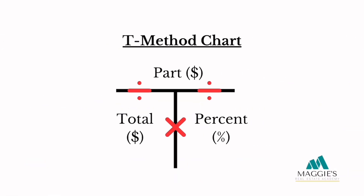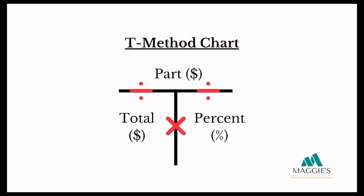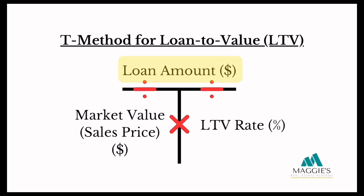Or we can just use the T-method chart to solve those problems. I'll link a video in the comment section below explaining the T-method, but it's so easy I'm sure you'll figure it out just by watching me solve these problems. For loan-to-value ratio, we use the T-method chart where the loan amount is the part and the sales price, market value, or assessed value is the total amount. Your loan-to-value ratio will always be the percent. Let's look at some examples.